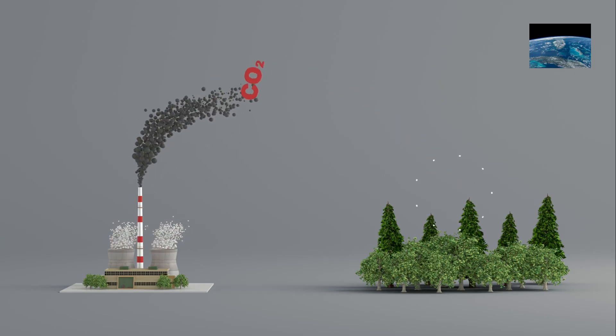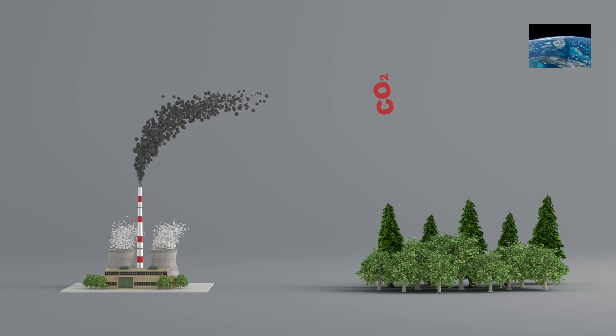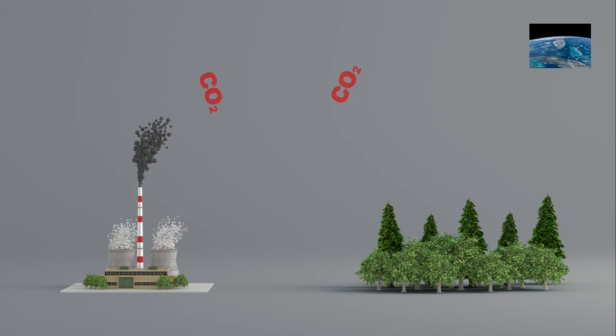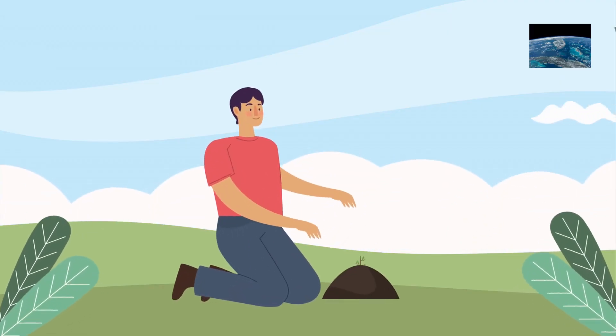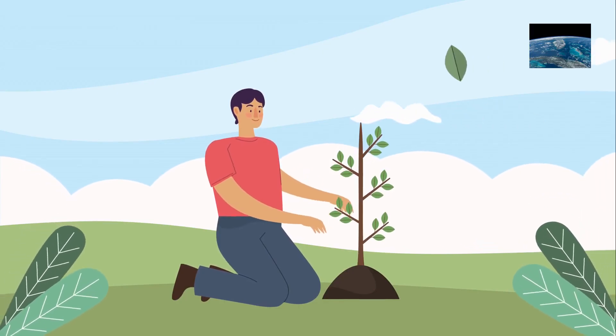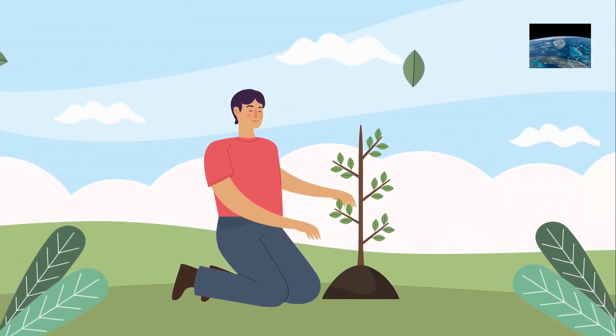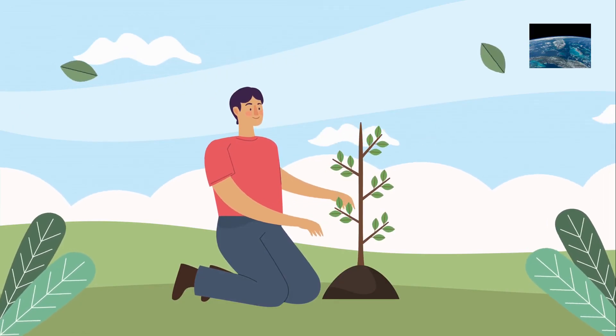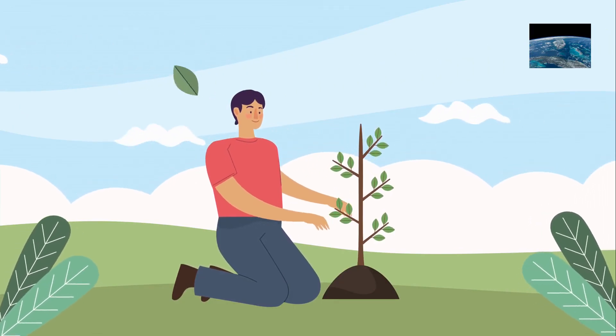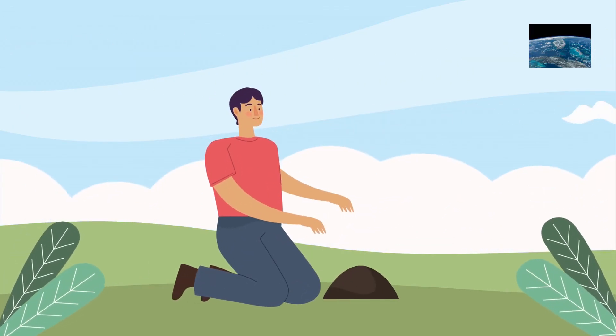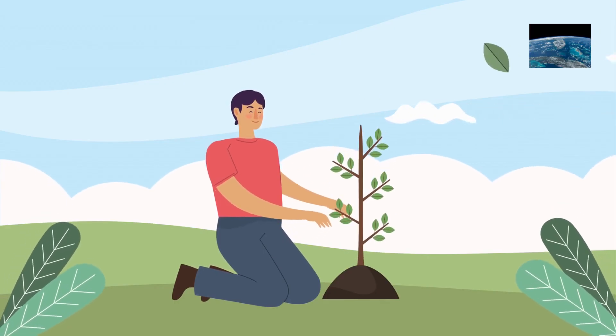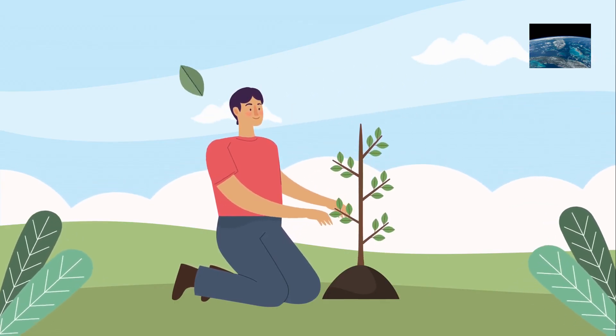But here's the big question, how do we figure out how many credits a project earns? To explain, let's zoom in on a fan-favorite example, a reforestation project. When we plant trees, they act like nature's vacuum cleaners, soaking up CO2 from the air as they grow. The more trees, the more CO2 we can lock away. But calculating carbon credits isn't just about counting trees, it's a little more involved than that.